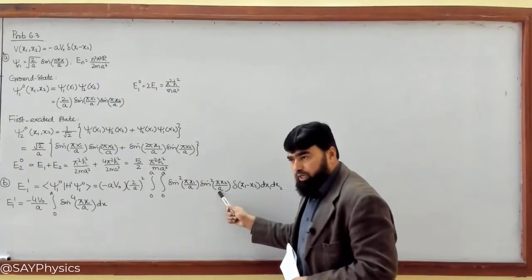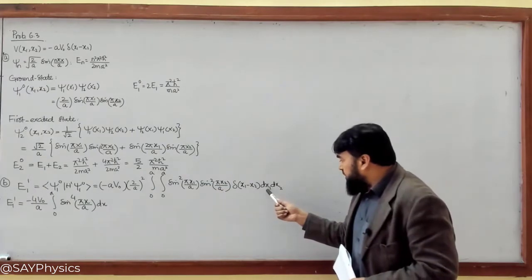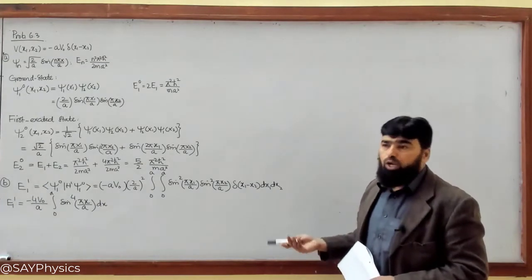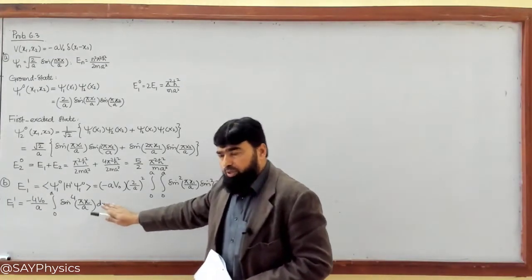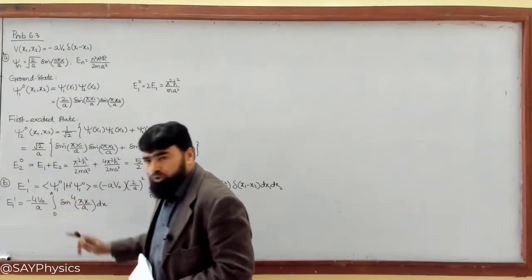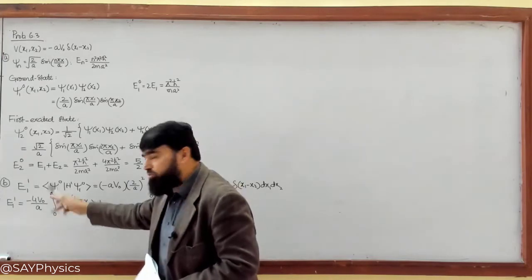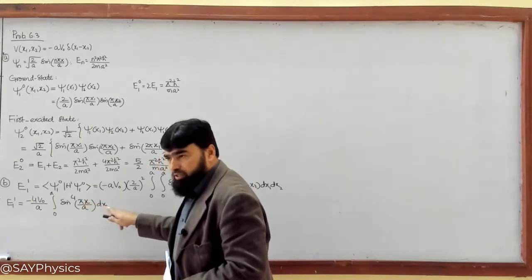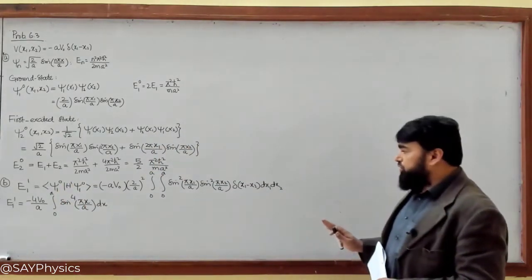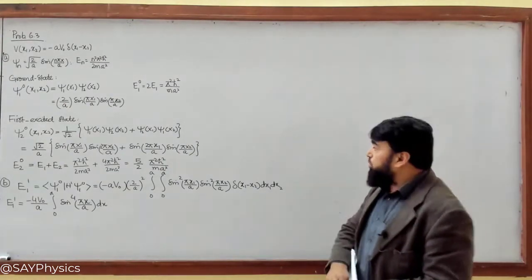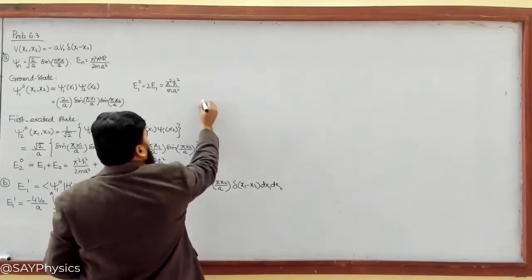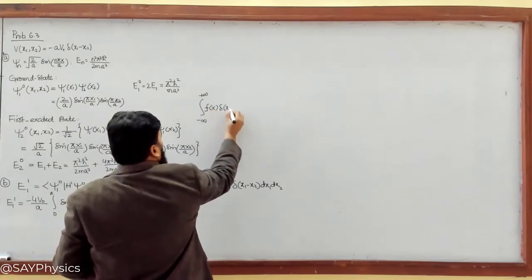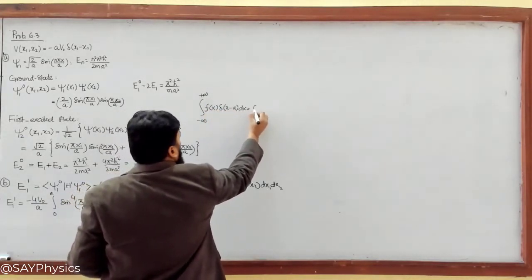And it will be πx₁/a, then πx₁/a, squared squared. This will become dx₁. If you write x₁ or you write x, there is no issue, because if it is x₁ it is running from 0 to a, and if it is x it is also running from 0 to a. So just the replacement here and here — the limits are the same. I have just written it in generalized form.